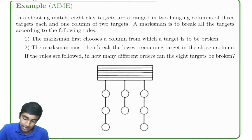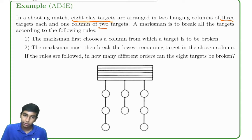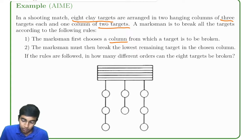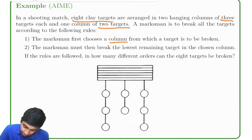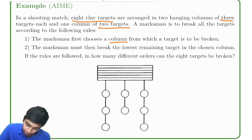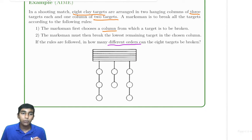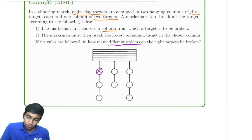In a shooting match, eight clay targets are arranged in two hanging columns of three targets each and one column of two targets. A marksman must break all targets by the following rules: first, the marksman chooses a column; then, the marksman must break the lowest remaining target in that chosen column. We're asked to find how many different orders the eight targets can be broken in — and it's not just 8 factorial, because we cannot shoot any target we like.